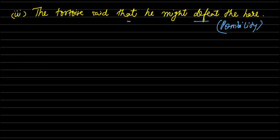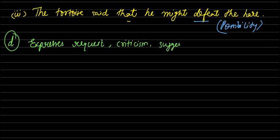So what did we see? Possibility or Permission. Now let's see the D form. Other uses of MIGHT. Expresses Request, Criticism, Suggestion, and fifth casual command.